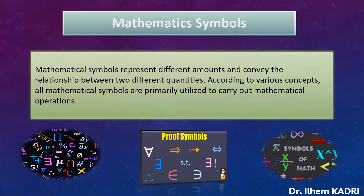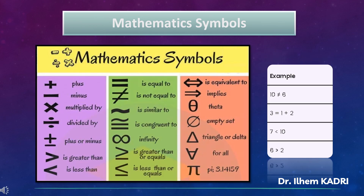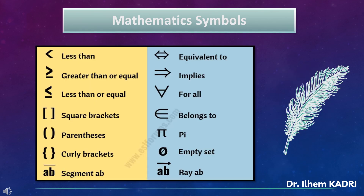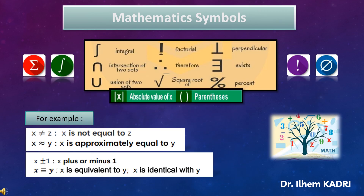Mathematical symbols represent different amounts and convey the relationship between two different quantities. According to various concepts, all mathematical symbols are primarily utilized to carry out mathematical operations. Here we give some important mathematics symbols with examples, including integral, intersection of two sets, and union of two sets.